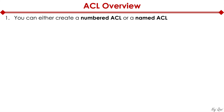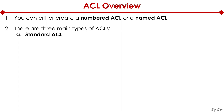You can either create a numbered ACL or a named ACL. There are three main types of ACL: standard ACL, extended ACL, and named ACL. Named ACL is not a new type of ACL — it's actually a spin on standard or extended ACL. Named ACL leverages either a standard or an extended ACL.